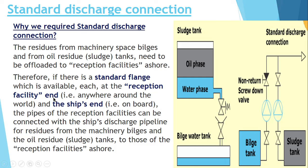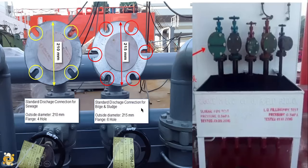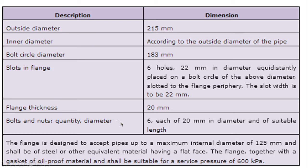At the reception facility end and the ship end, the pipe of the reception facility can be connected with the ship's discharge pipeline from residue from machinery space bilge and oil residue. Onboard, on the port side and starboard side, the standard discharge connection is fitted having a diameter of 215 mm — meaning the distance from end to end is 215 mm — and they have been provided with 6 holes. The bolt circle diameter (PCD) should be 183 mm.